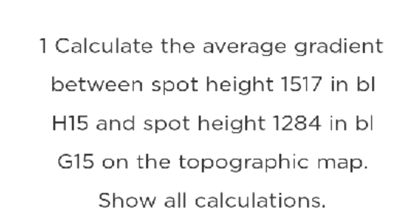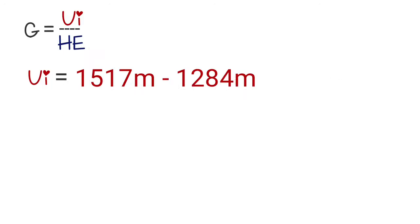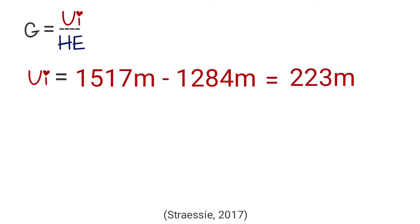So you calculate 1517 minus 1284 and the answer is 233 meters. We say meters because the spot heights are in meters. Now that we have found our VI, we need to find our HE — our horizontal equivalent.